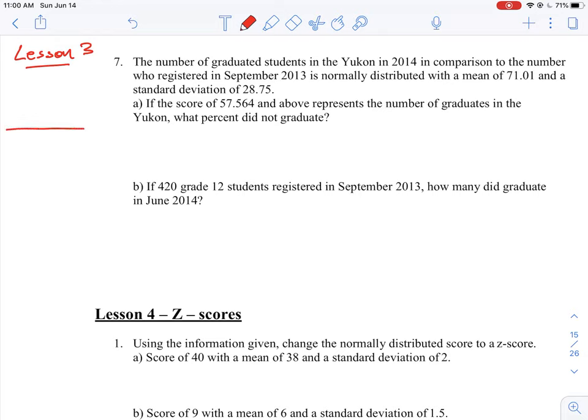If we sketch a curve to understand what we've got here, it's normally distributed, which means it's symmetrical around the mean. Our mean here is 71.01. The thing we have to be careful about is that we can't really have a fraction of a student. It's just a statistical count, so it would either be 71 or 72 students, so an answer could vary by there.